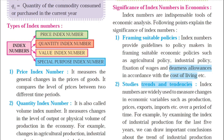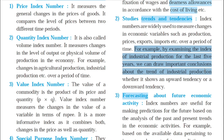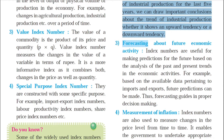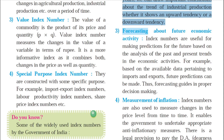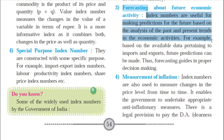To study trends, index numbers are widely used to measure changes in economic variables such as production, prices, exports, and imports over a period of time. For example, by examining the index of industrial production for the last five years, we can draw important conclusions about the trend of industrial production — whether it shows an upward or downward tendency. Also, for forecasting future economic activity, index numbers are useful for making predictions based on analysis of past and present trends. For example, based on available data pertaining to imports and exports, future predictions can be made, thus guiding proper decision making.